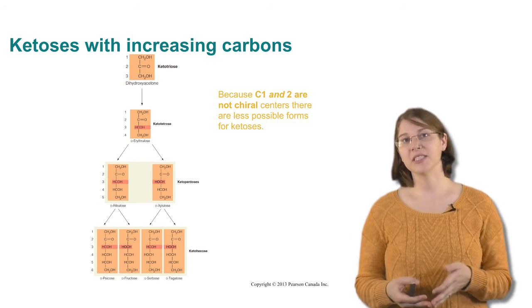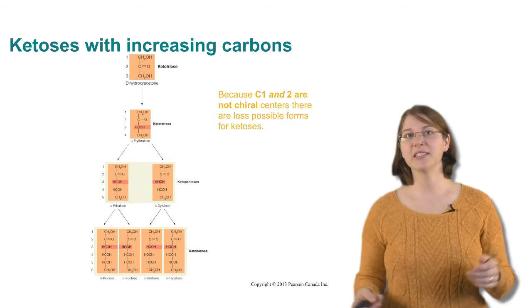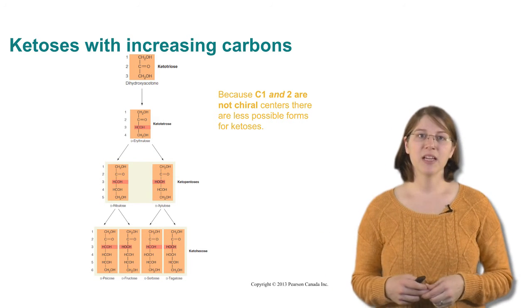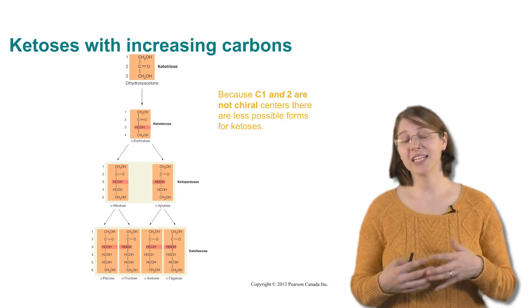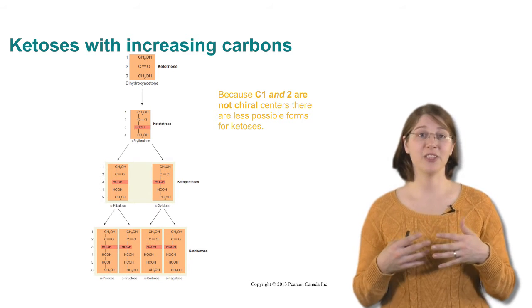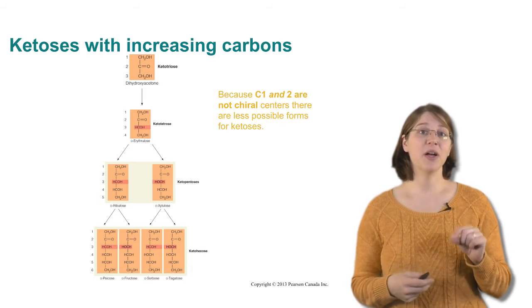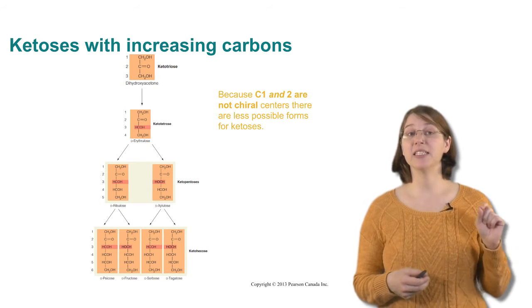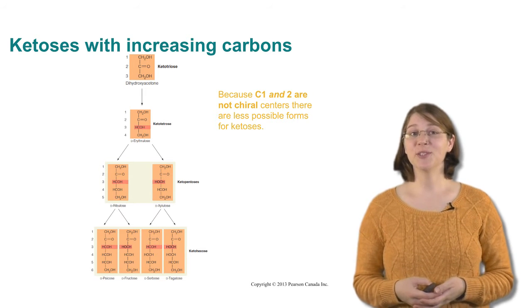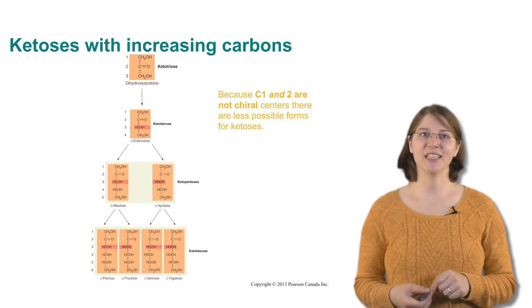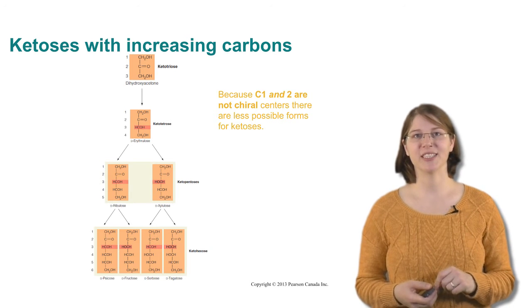In ketosis, because there are less carbons that have two sides, we have less variation. But you still end up with the second to last carbon having a hydroxyl group or an OH group on the right hand side, making it a D sugar. The ketose that you're probably most familiar with is fructose, which is shown in the six carbon sugar, the hexose.